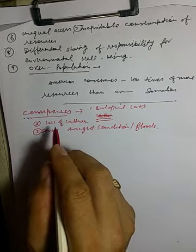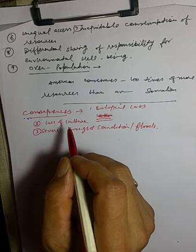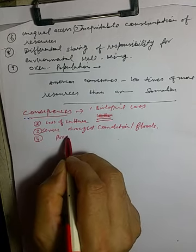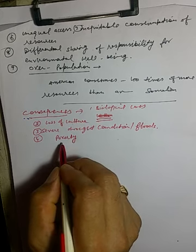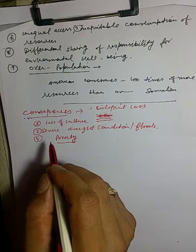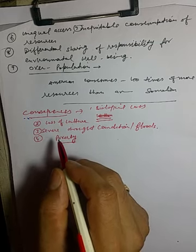These all are consequences of loss of flora and fauna in any part of the world. Poverty is an outcome of loss of our flora and fauna, because if our flora and fauna is lost, the chances of poverty increase.